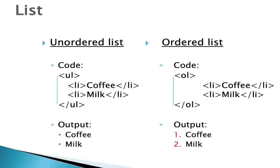We can also display items in list format. UL is for the unordered list — for example, coffee and milk will be displayed as an unordered list using UL and closing UL tags with LI items. The other type is the ordered list — under OL, coffee and milk will be displayed as 1 and 2. We can also change the order — we can use ABCD or Roman numerals.